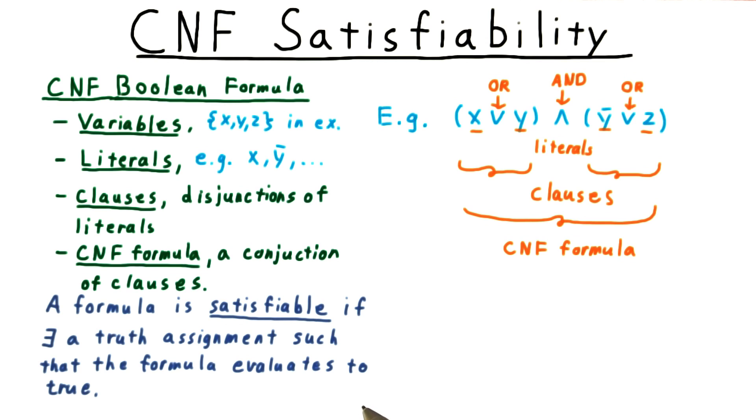As for satisfiability itself, we say that a Boolean formula is satisfiable if there is a truth assignment for the formula - a way of assigning variables true and false such that the formula evaluates to true.